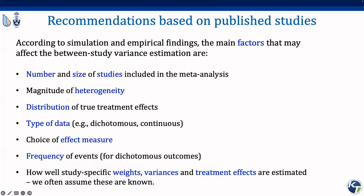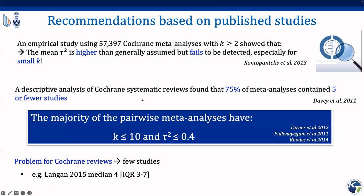Before making any inference on the choice of estimation alternatives, we need to understand the main factors that may affect between-study variance estimation. These include number and size of studies, magnitude of heterogeneity, distribution of true treatment effects, type of data, effect measure, frequency of events, and how well study-specific weights, variances, and effect sizes are estimated — and these are often assumed to be known. An empirical study using around 60,000 Cochrane meta-analyses has shown that heterogeneity fails to be detected and is generally higher than assumed, so we need alternative methods.